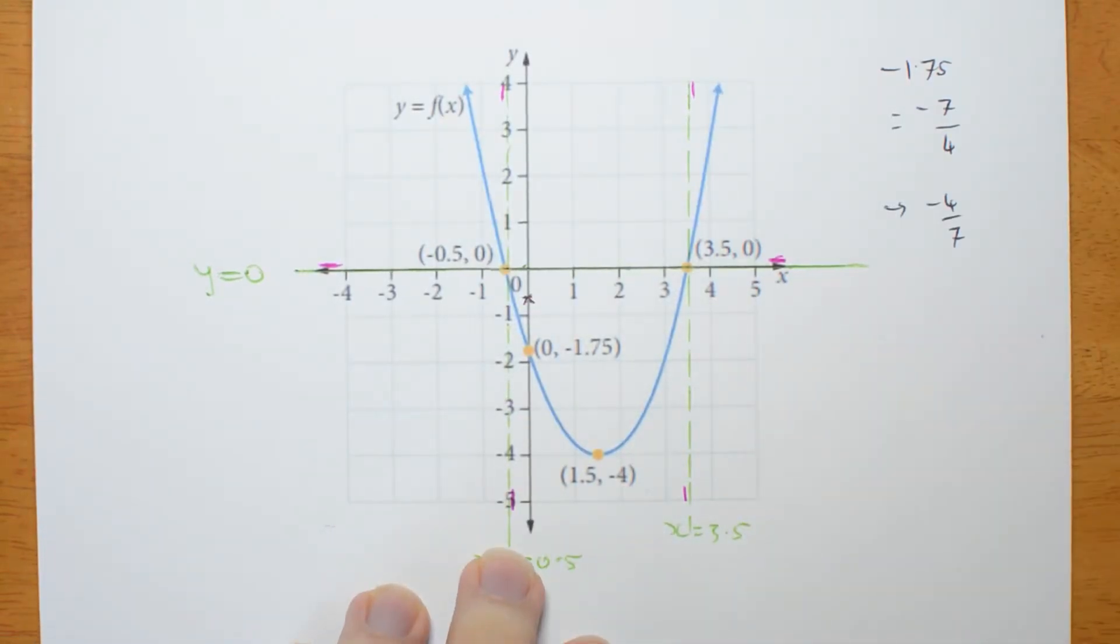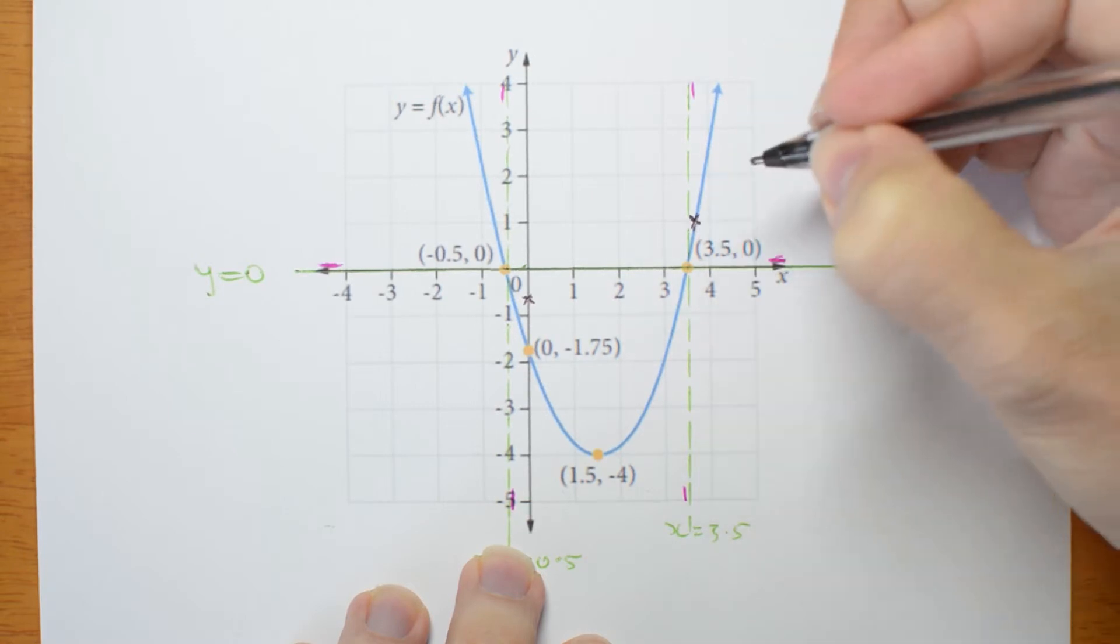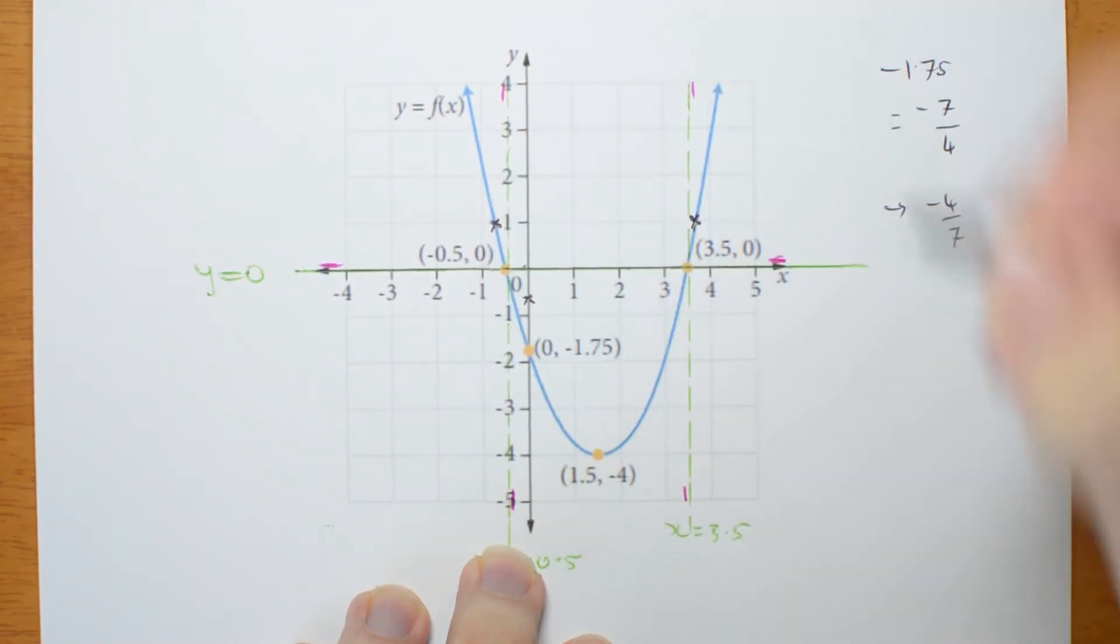Now, where do they cross over? As always, they're going to cross over where the original graph is 1. There and there. Now, I don't know the exact coordinates of those points, so I can't label them very precisely.